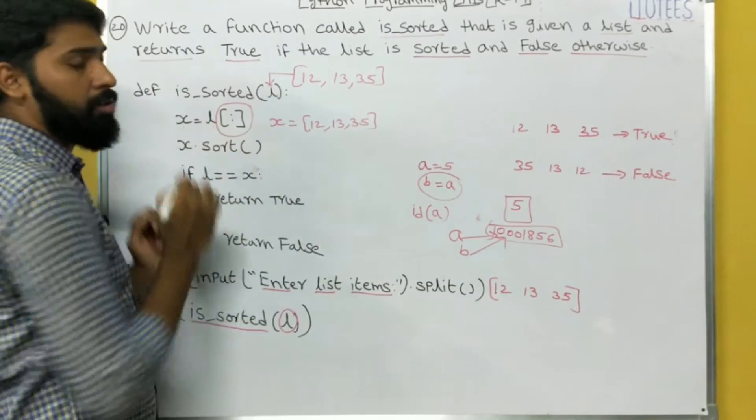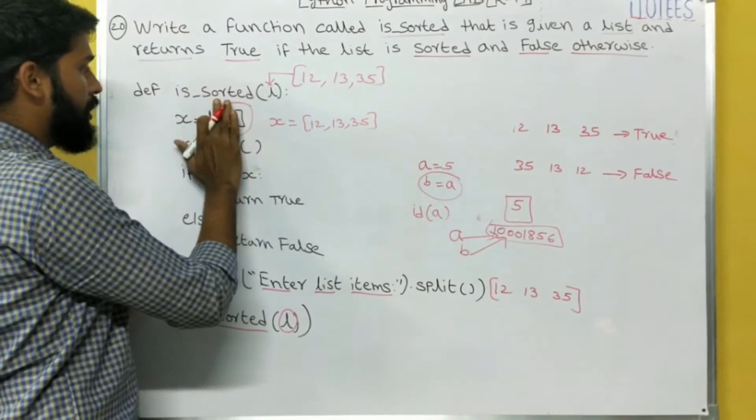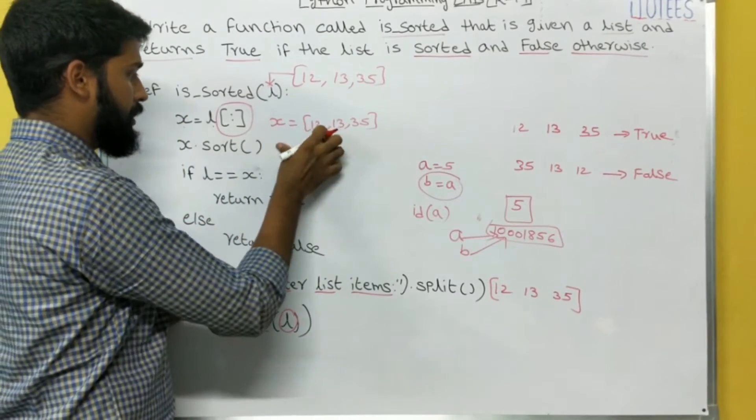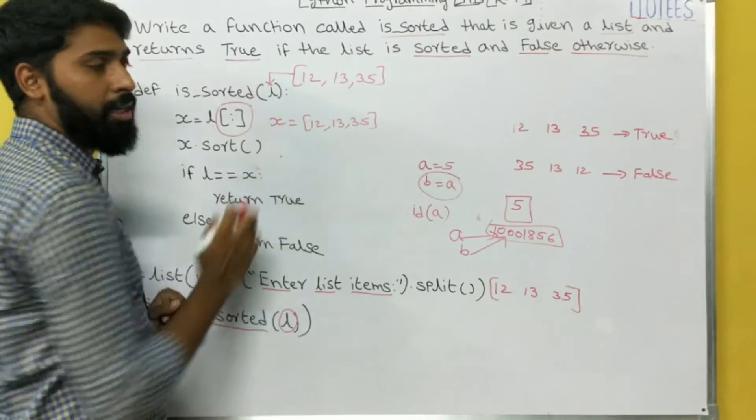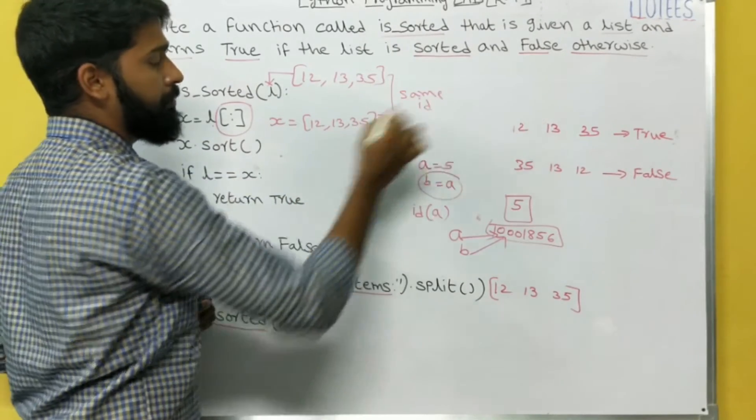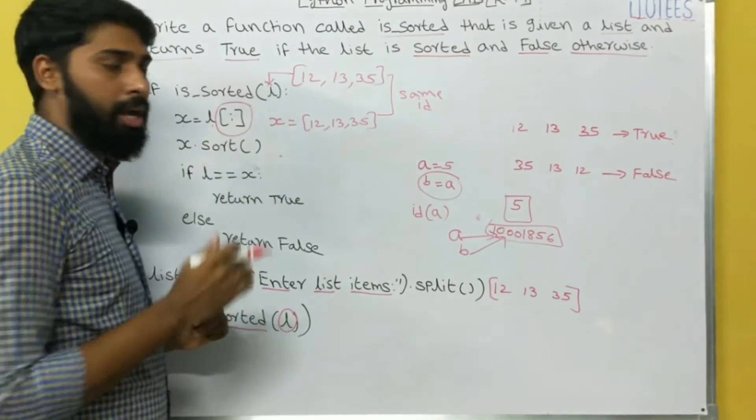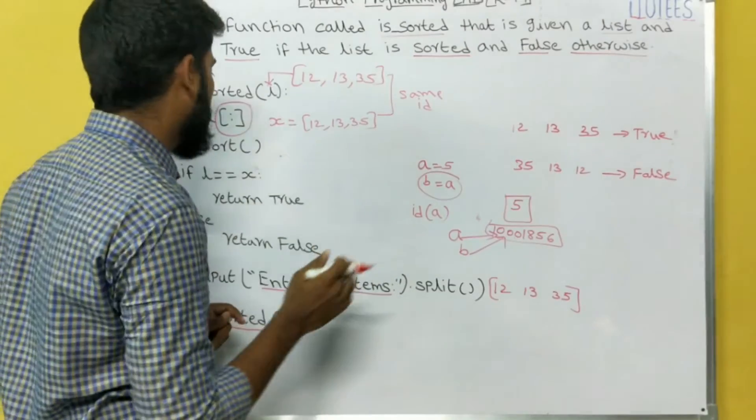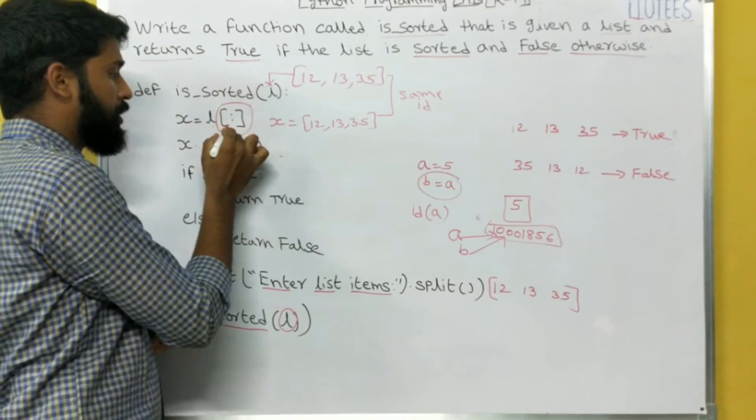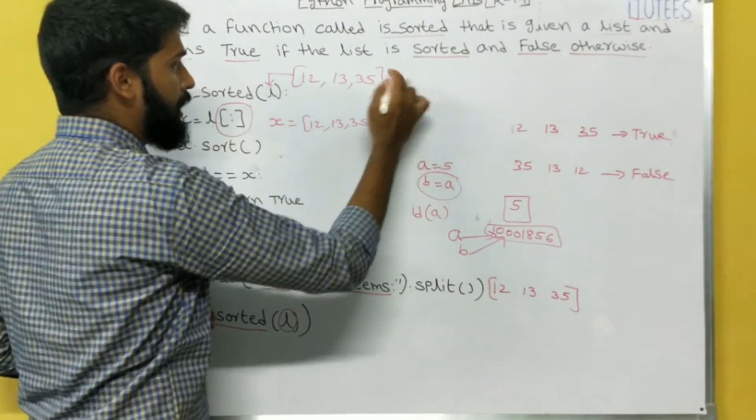Similarly, X equals to L means X has some object like this. Without this, if I assign X equals to L, then L is also, X is also 12, 13, 35, but both have the same ID, same object identity. That means if I change the L, automatically X also changes. That's why we don't want that. I can use square brackets colon. That means the contents are the same, but the IDs are different.